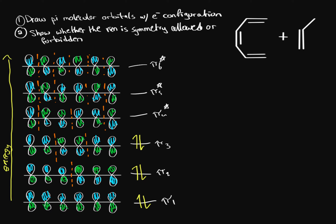We can also label these orbitals as HOMO — the highest occupied molecular orbital — and LUMO — the lowest unoccupied molecular orbital. The HOMO of hexatriene is going to interact with the LUMO of the propene dienophile, and this will tell us whether the reaction is symmetry allowed or symmetry forbidden.